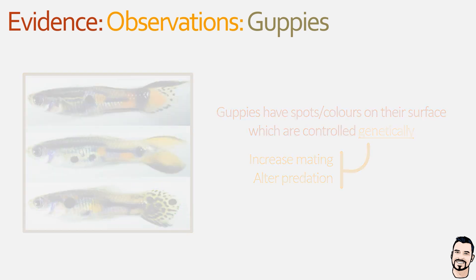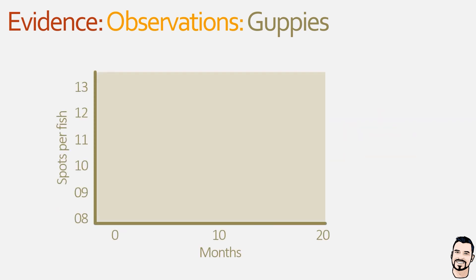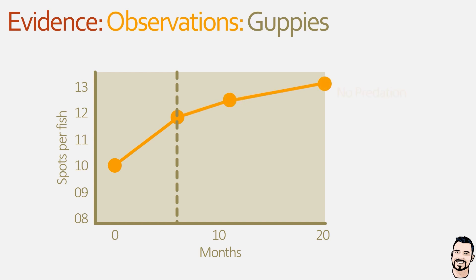Endler built several artificial ponds, each containing guppies with zero predators. At the start, the average number of spots per male was around 10, and after around six months with numerous rounds of reproduction, the average increased from 10 to 11.8. He then split the populations into three groups. The first group continued without a predator; by the 20-month mark, the average number of spots increased from 11.8 to 13, because in the absence of a predator the more attractive males with the most spots fathered more offspring, and since spots are under genetic control, the offspring had more spots.